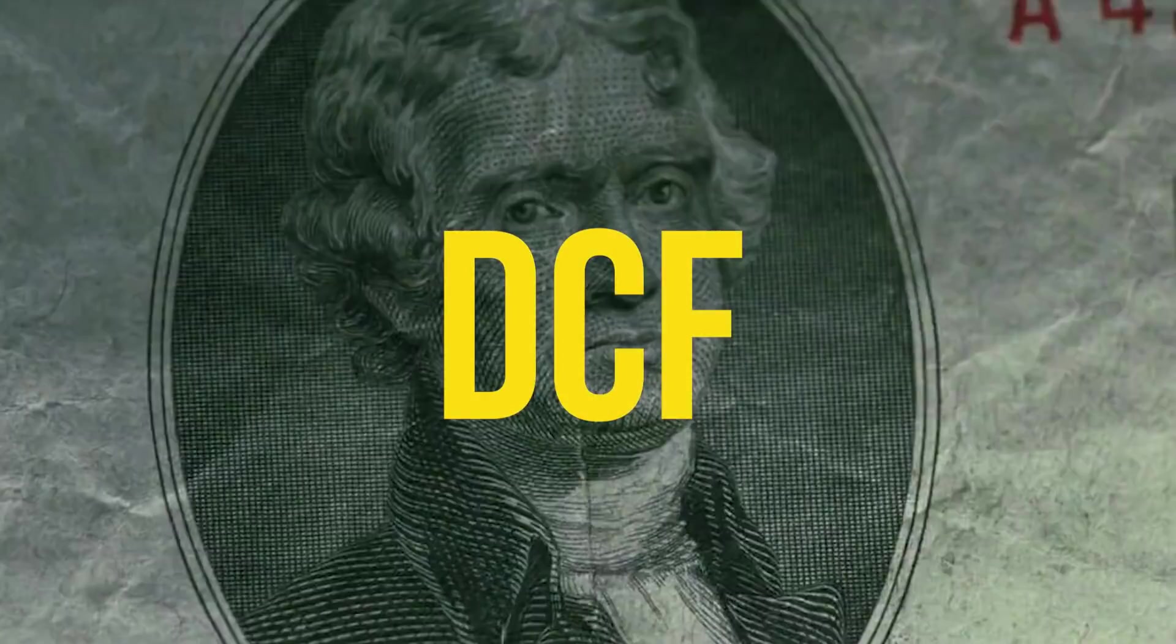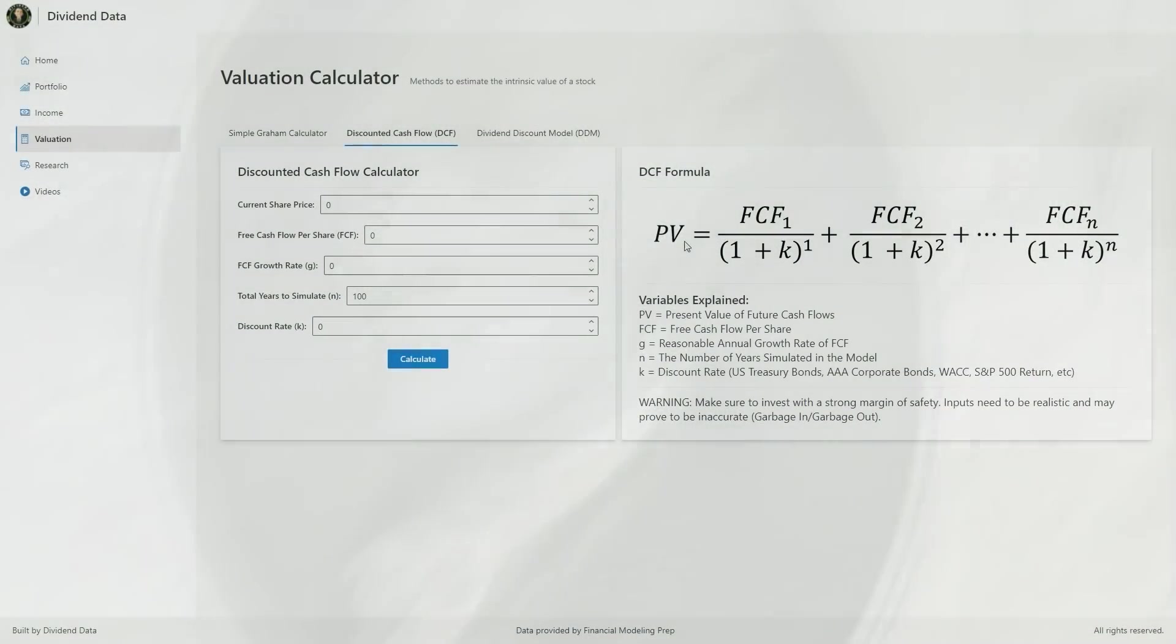So what is discounted cash flow? It's a method used to calculate the value of an investment based on its expected future cash flows. The main idea here is that you're projecting out the future cash flows of the business, then applying a discount rate, giving you the present value of those future earnings. Let's listen to Warren Buffett explain this concept.